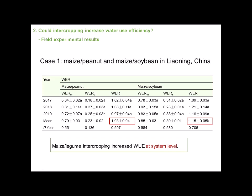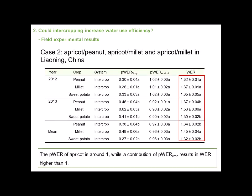The WER of the two maize-legume systems are higher than 1, indicating a significant water use advantage in maize-peanut and maize-soybean intercropping. When crops intercrop with trees, the partial WER of trees is around 1, but the contribution of crops results in the system-level WER being higher than 1.